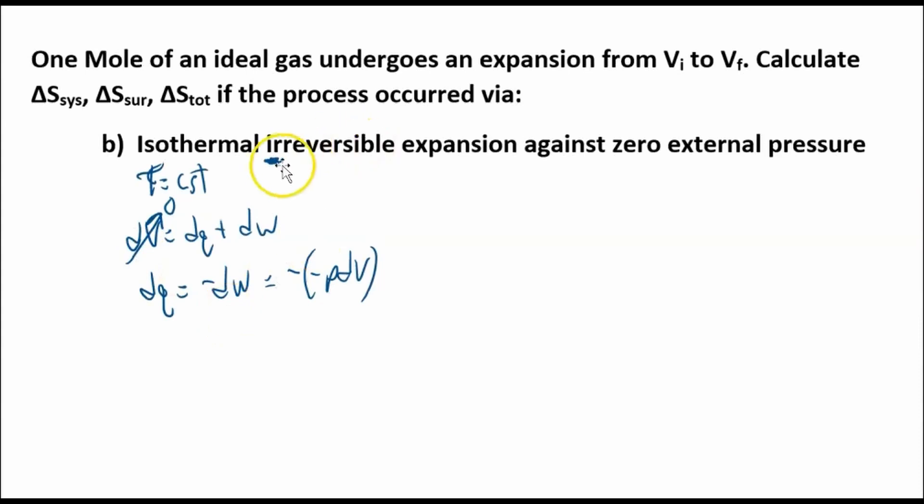And if this is irreversible, then this p here is the external pressure. If the work is irreversible, this is the external pressure. Well, this is zero external pressure, so we want to make this zero. That means this is zero. So there's no heat transfer, so dq equals zero.